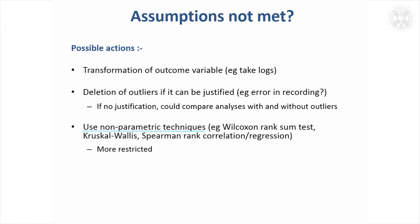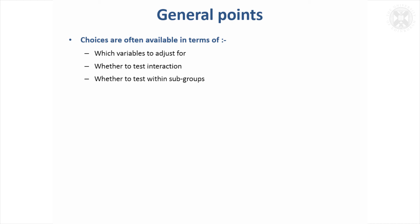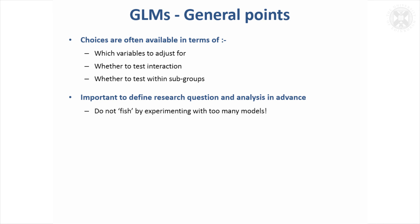A couple more general points: when deciding which general linear model to do, you've got choices available. You can choose which variables to adjust for, whether to test interaction, whether to test within subgroups. This opens up a lot of different choices and flexibility for fitting different models. There might be a temptation to try lots of things until something's significant, but that really isn't a good way to go because you're multiple testing—the more you try, the more likely you are to find something significant by chance. It's important to define your research question in advance and choose one analysis that suits it best. Don't fish around too much by experimenting with too many models.